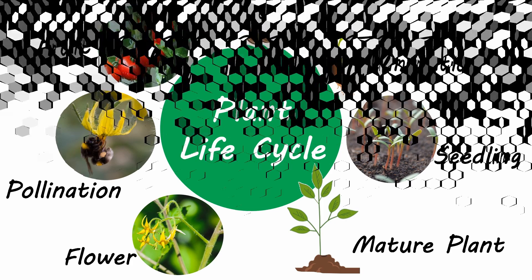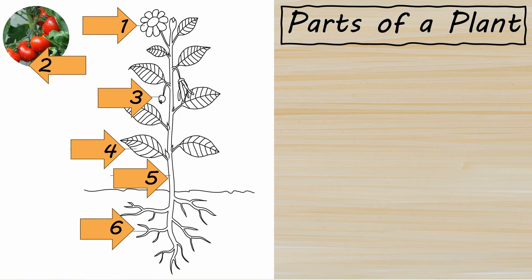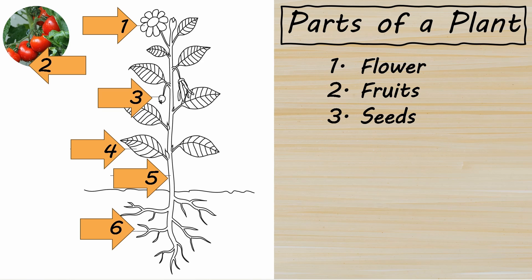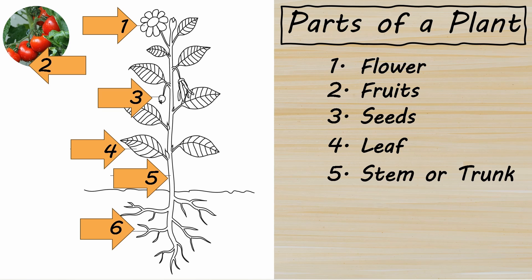You're all set to take the quiz. Round one. There are six numbers labeled on the picture. Let's start from number one and say out loud the plant's part. Number one: flower. Number two: fruit. Number three: seeds. Number four: leaf. Number five: stem or trunk. Number six: roots.